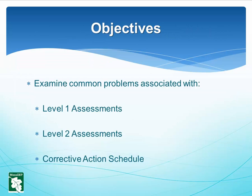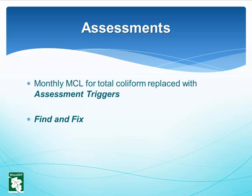Today's objectives: let's examine common problems MassDEP has seen with Level 1 Assessments, Level 2 Assessments, and Corrective Action Schedules. Under the RTCR, the monthly MCL for total coliform has been eliminated and replaced with assessment triggers — Level 1s and Level 2s — in order to direct water systems to find and fix problems that might contribute to bacterial contamination.